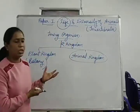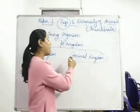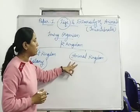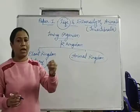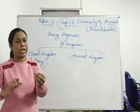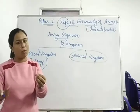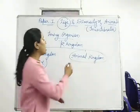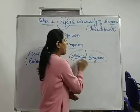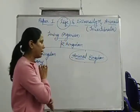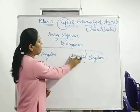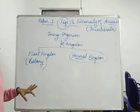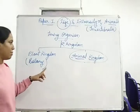Zoology means the study of animals. So we will concentrate on the animal kingdom. Animals are living organisms which move from one place to another and can reproduce — these will be included in the animal kingdom and in the living organisms. Now let's talk about this animal kingdom.